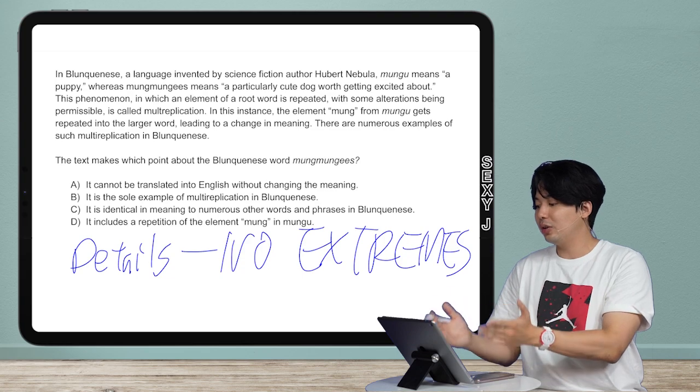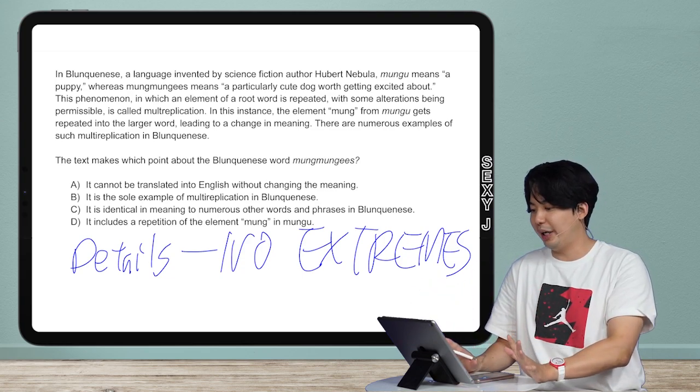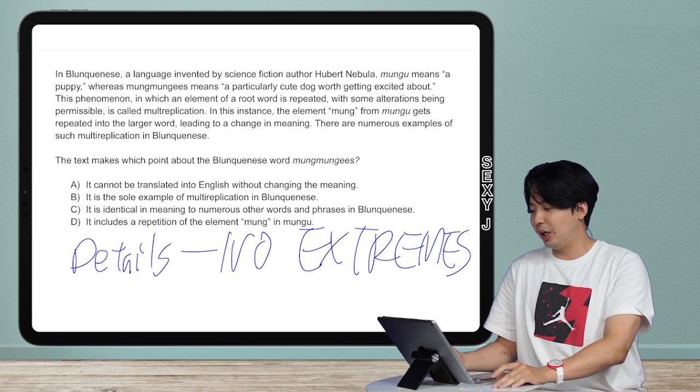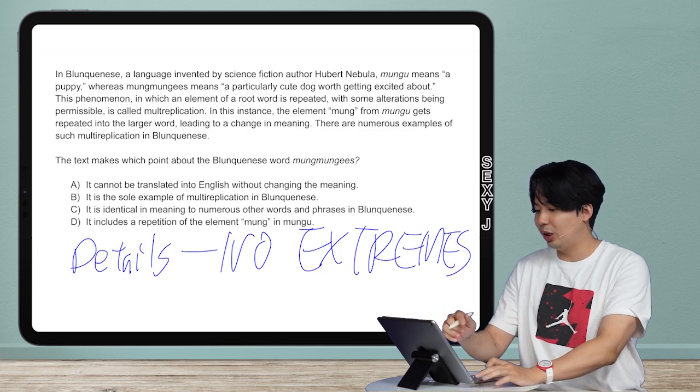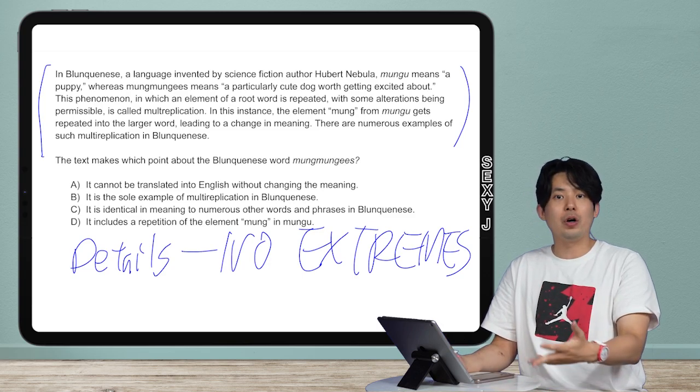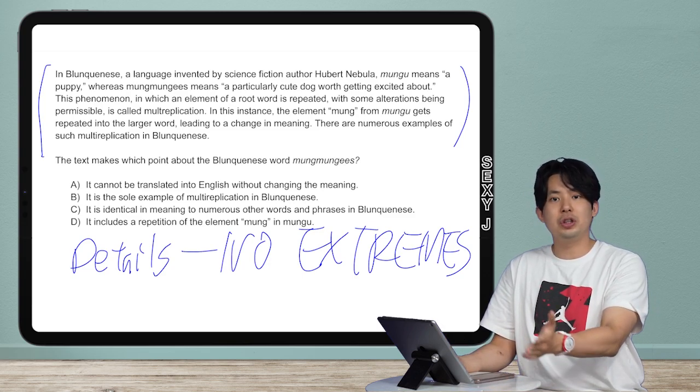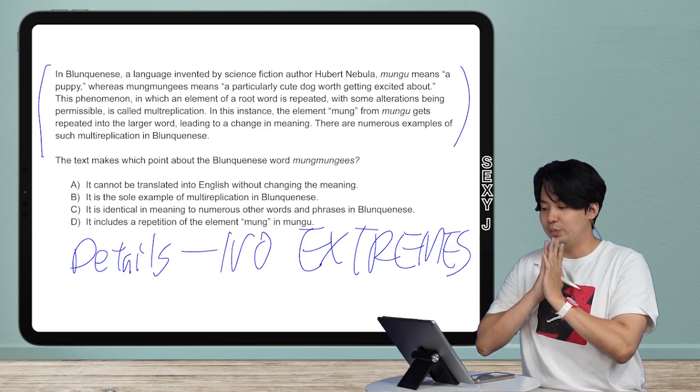Disclaimer: I made this question as you guys know, and none of these things in this question are real. I made it all up. There is no language called Blanconese, there isn't a science fiction author named Hubert Nebula, or maybe there is, I don't know. This is all just made up by me for you guys, and these questions that I'm doing right now are modeled on the June international SAT digital. These are very much super similar to what SAT is giving out on the real test right now.